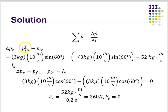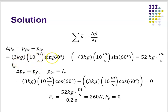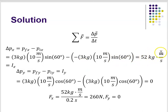I've already solved for my final and initial momentum in x. So my delta px — the x component of my impulse — is just p final x minus p initial x. Plugging in: three kilograms times 10 meters per second times the sine of 60, minus negative three kilograms times 10 meters per second times the sine of 60. That gives me two times three times 10 times the sine of 60. When you plug that into your calculator, you get 52 kilogram meters per second, or newton seconds.